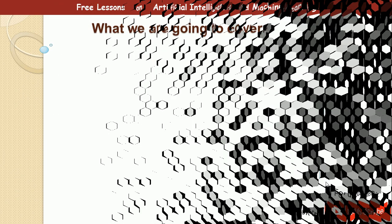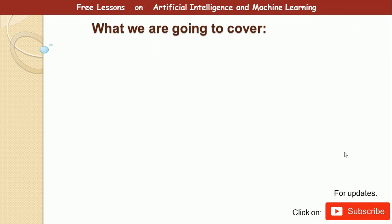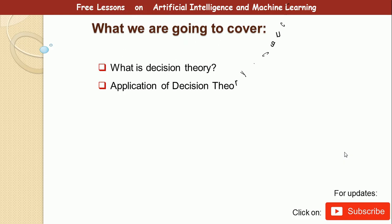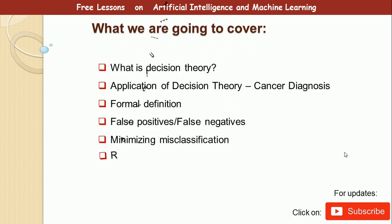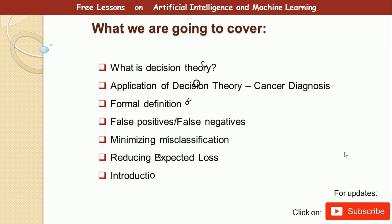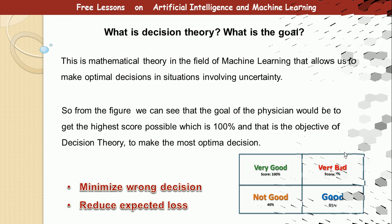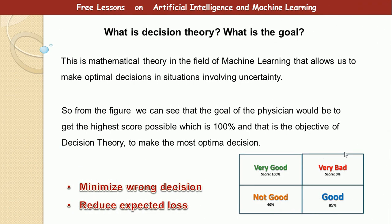So let's see what we are going to cover today. We are going to discuss seven different topics: what is decision theory, application of decision theory in cancer diagnosis, a formal definition, differentiating between false positives and false negatives, minimizing misclassification, reducing expected loss, and an introduction to ROC — receiver operating characteristics.